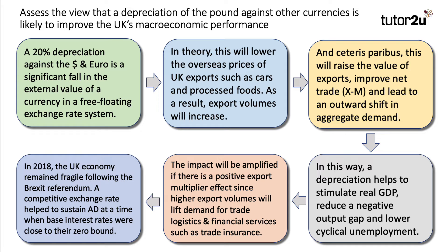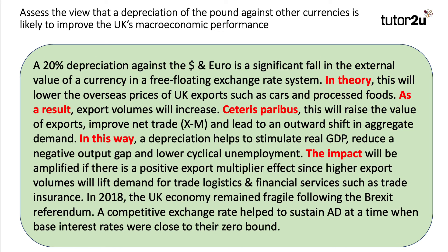A little bit of application: the context of the question was the fall in the pound in 2018. The UK economy was fragile following the Brexit referendum — there was a fear of a recession in 2016. A competitive exchange rate helped to sustain aggregate demand at a time when base interest rates were close to their zero lower bound, so the Bank of England had little room left to cut interest rates to stimulate the economy. Therefore, a fall in the pound helped increase aggregate demand. Use connective phrases like 'in theory', 'as a result', 'ceteris paribus', 'in this way', and 'the impact will be' to connect your chain of reasoning.